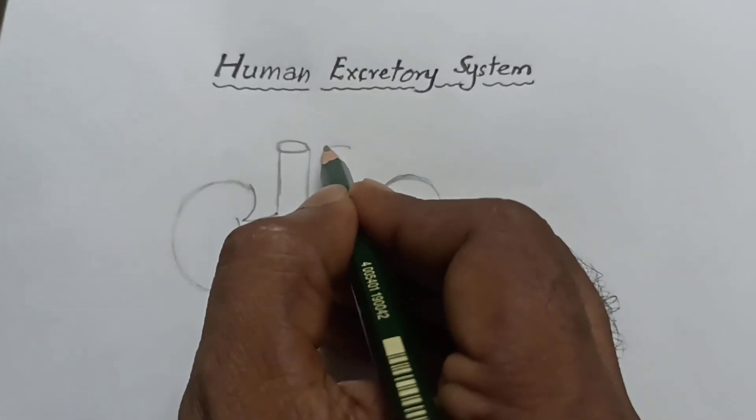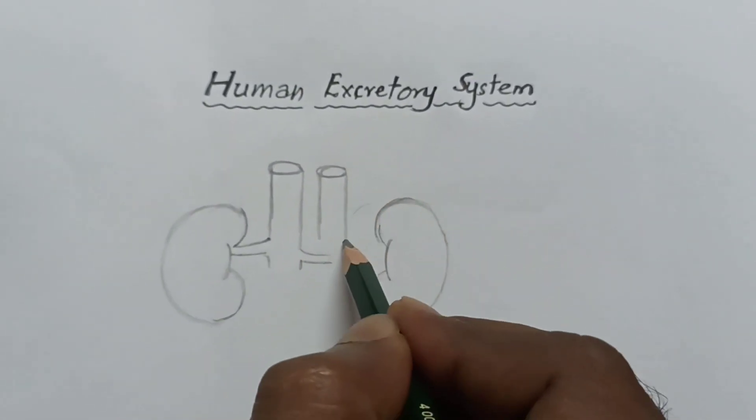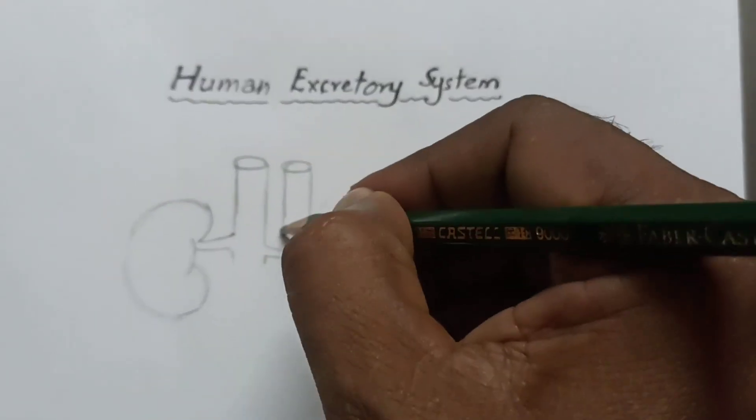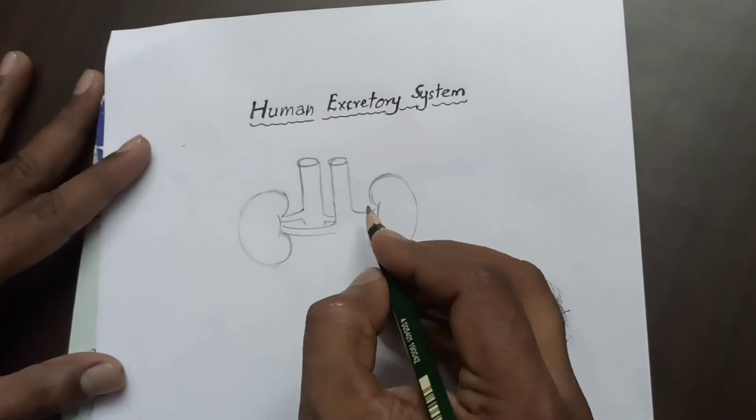Now I am drawing dorsal aorta. These are renal arteries, which enter into the kidneys.